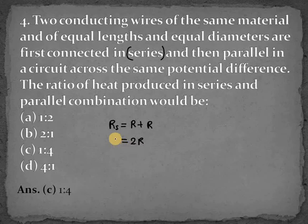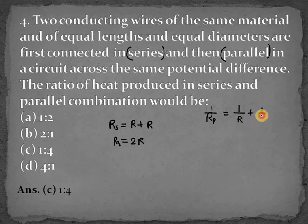Now in the second configuration, they are connected in parallel. So for Rp, 1 over Rp equals 1 over R plus 1 over R, which equals 2 over R.